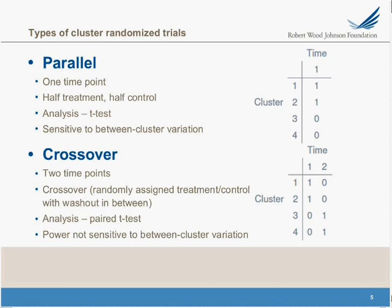An alternate way of dealing with that is the crossover cluster randomized trial, where you use two time points and cross over. The crossover time is randomly assigned — each unit is assigned the treatment period or control first, then there's a washout and they cross over to the alternate. The analysis is a paired t-test, and power is no longer sensitive to between-cluster variation because each cluster spends time as treatment and as control. This works for interventions that can be turned on and off. In our case, since our intervention involved educating nurses, we couldn't turn it off — once nurses have been educated, we can't take away their knowledge. So it's impossible for us to do a two time-point crossover trial.